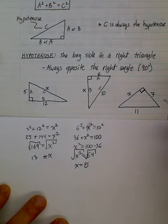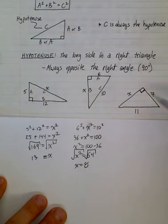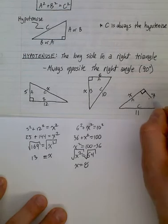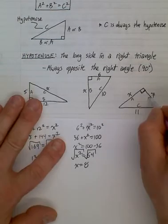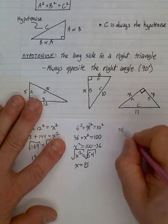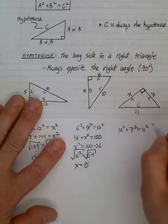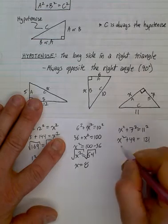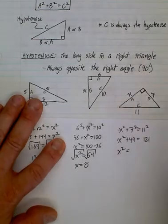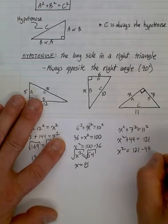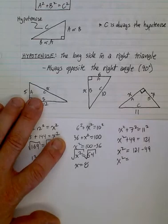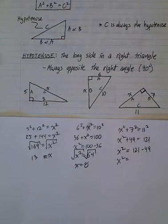Last one here. Again, if you flip the sheet, it's opposite the right angle, this would be the c. Let's call that a, let's call that b, doesn't really matter. So now you have x² + 7² = 11². x² + 49 = 121. x² = 121 - 49.